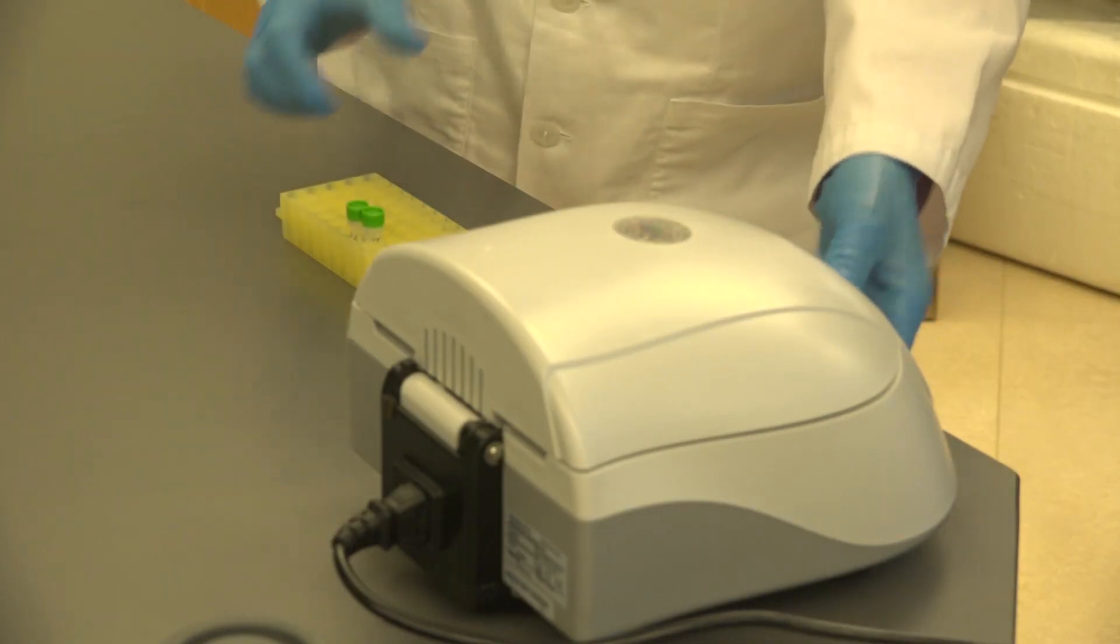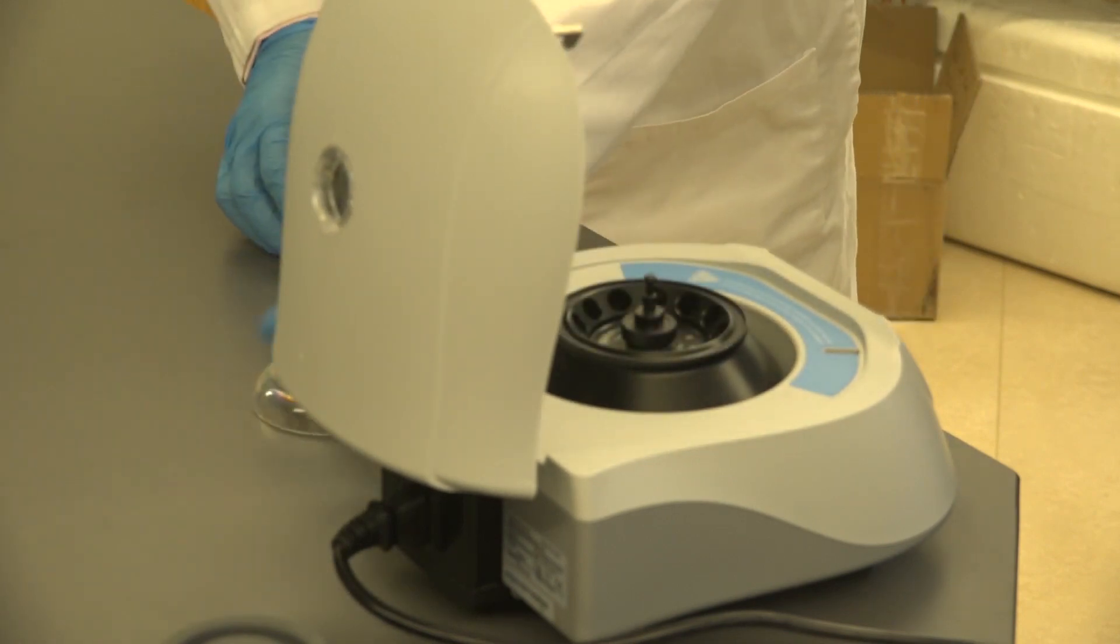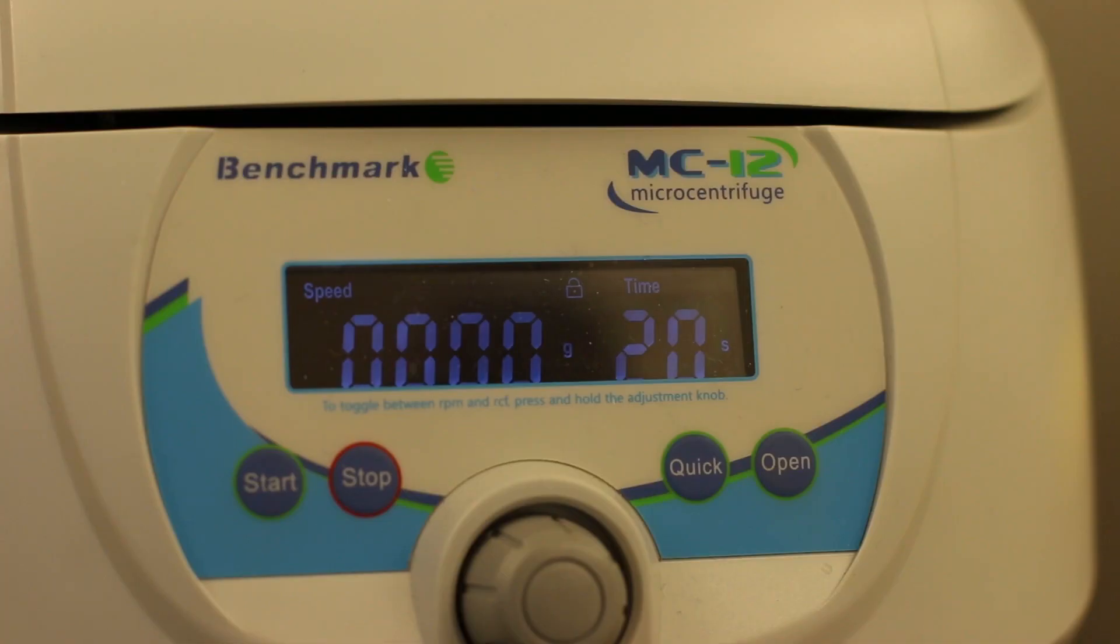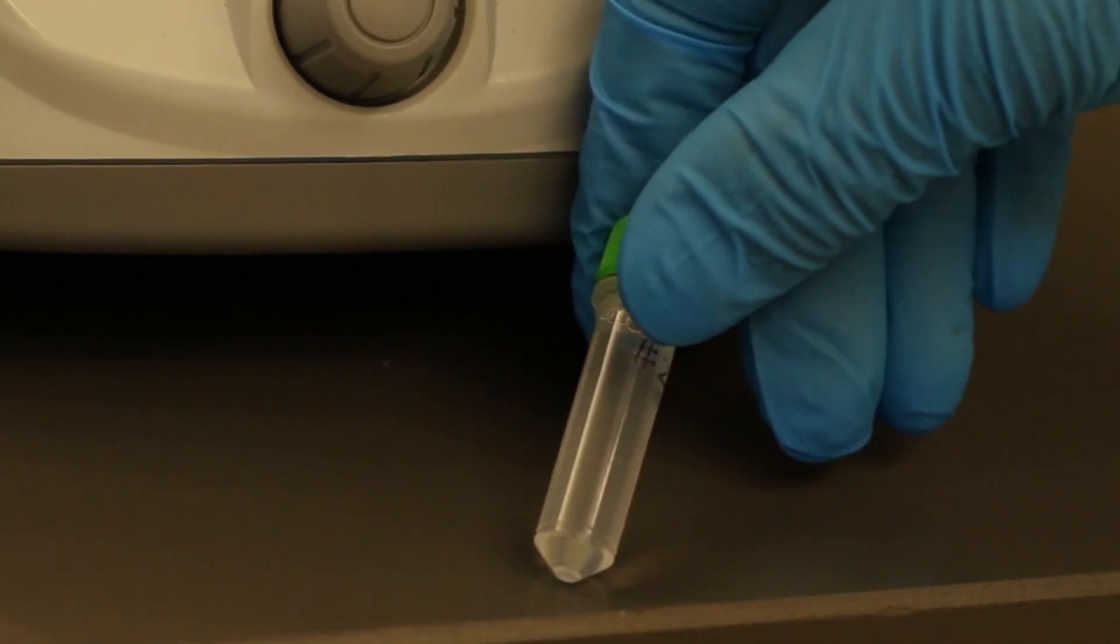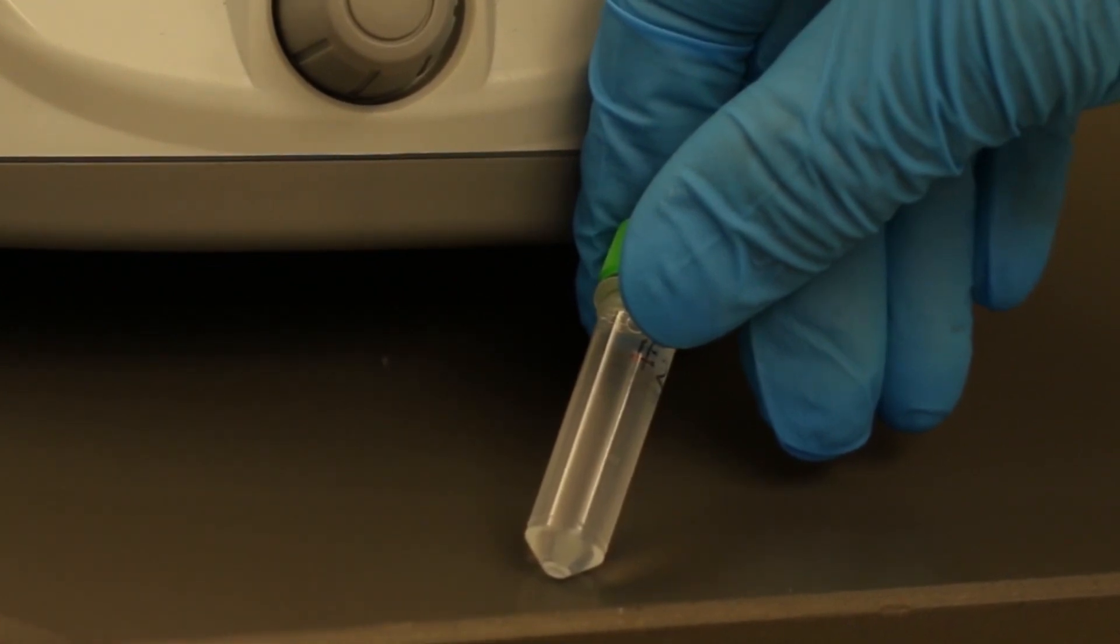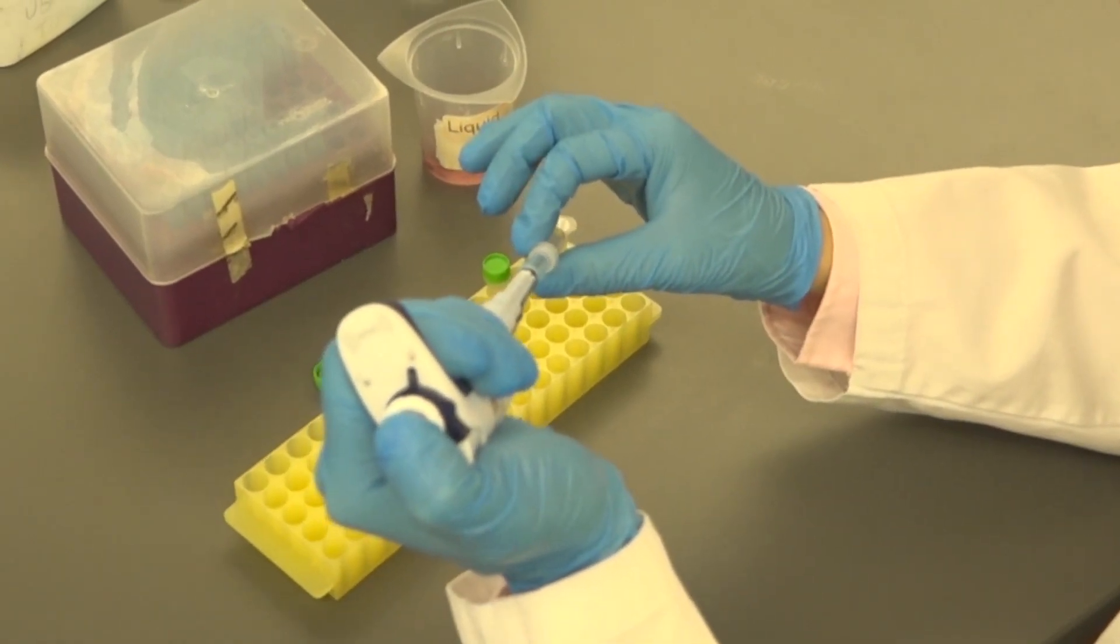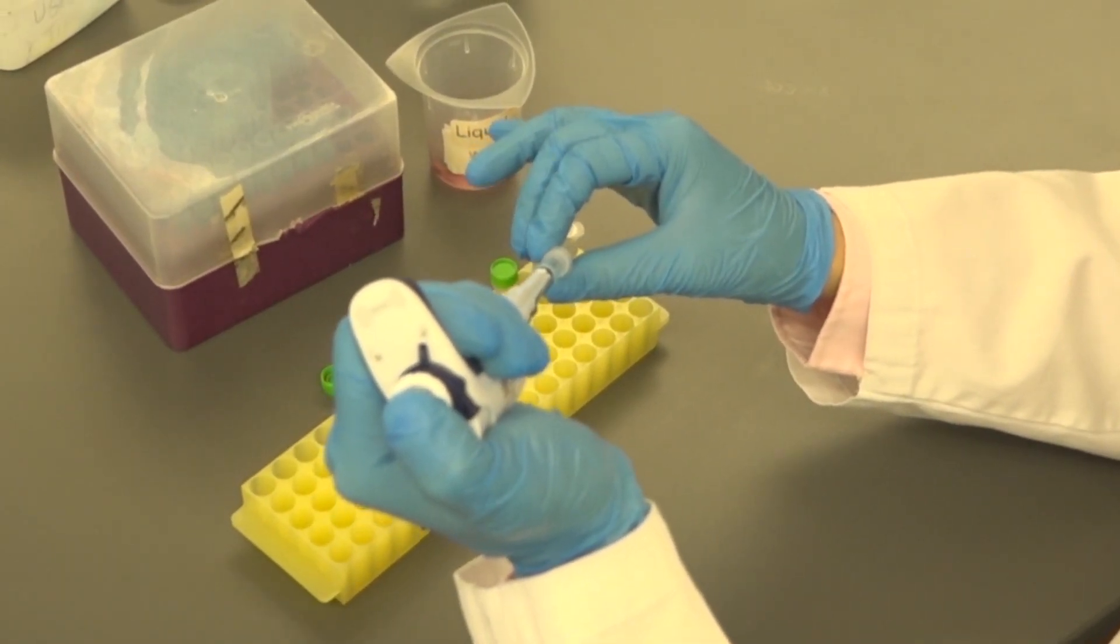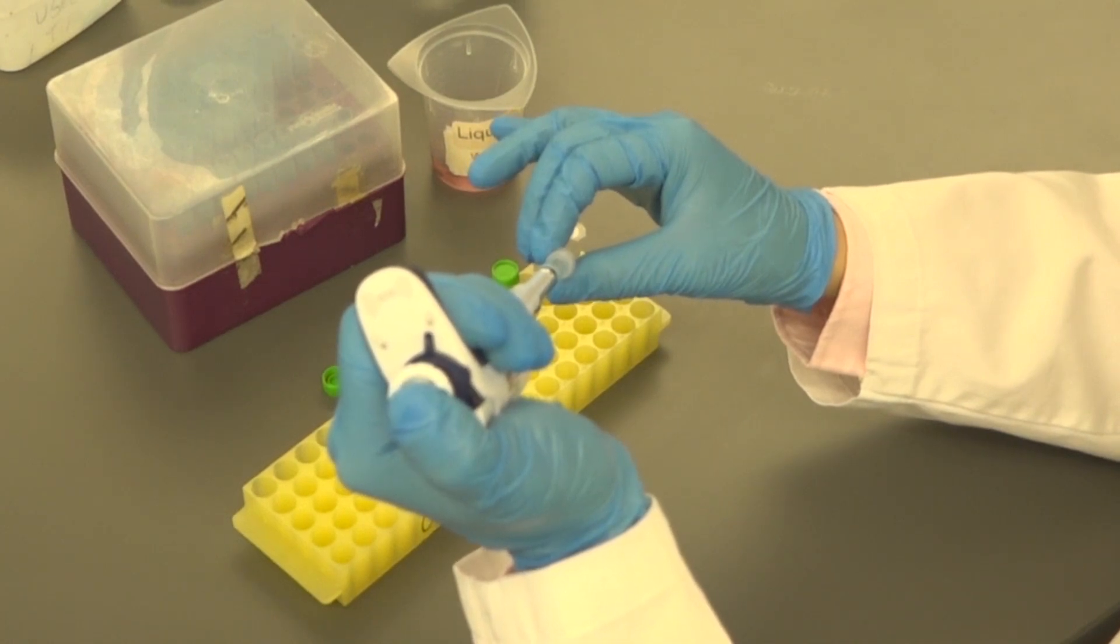After cells are collected from both dishes, centrifuge both tubes for 3 minutes to pellet down the cells. After the centrifugation is complete, check to make sure there's a white cell pellet at the bottom of the tube. Use a P1000 to remove as much supernatant as possible without disturbing the cell pellet.